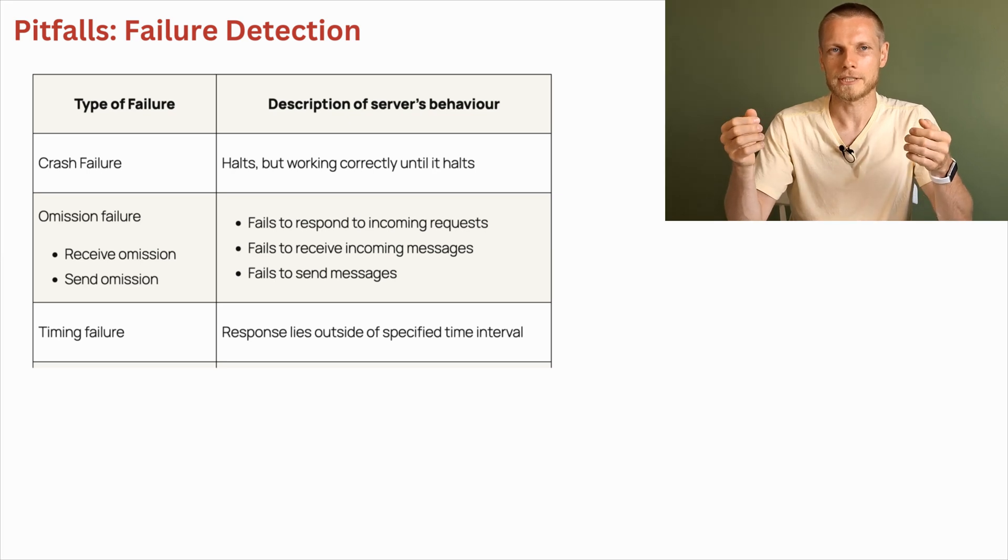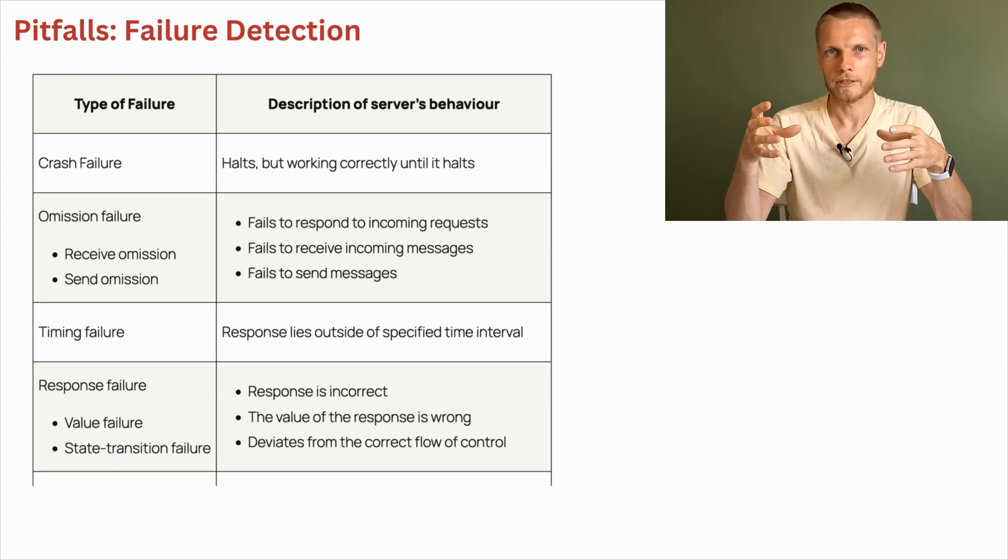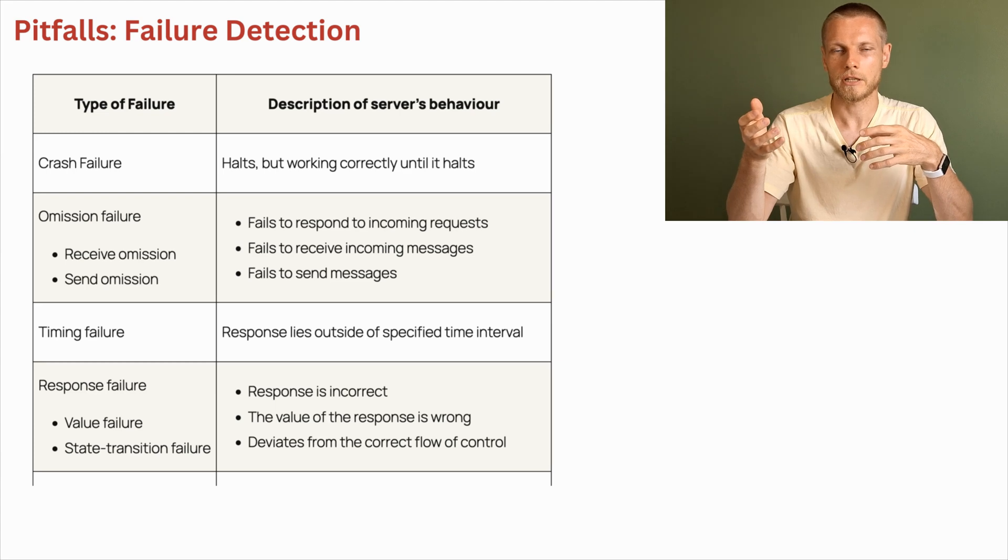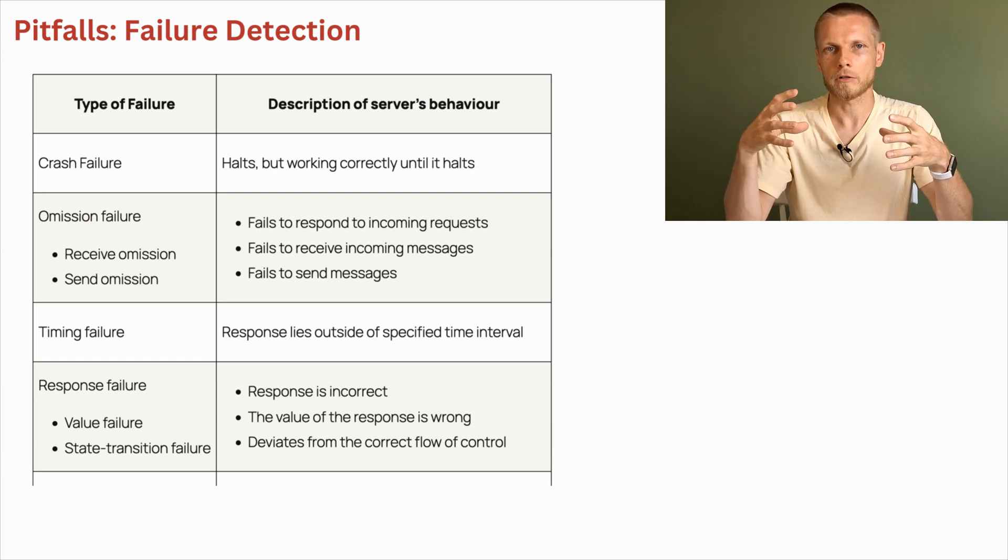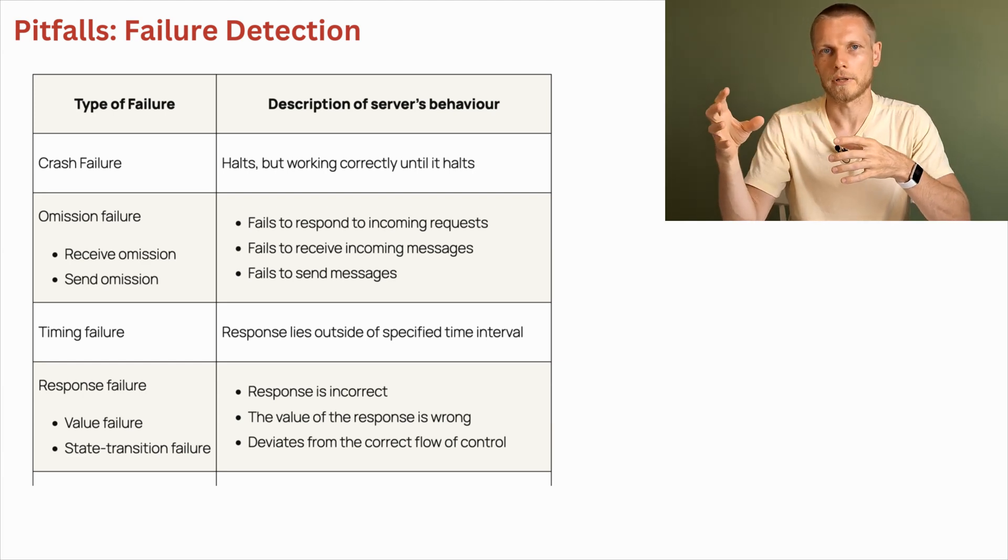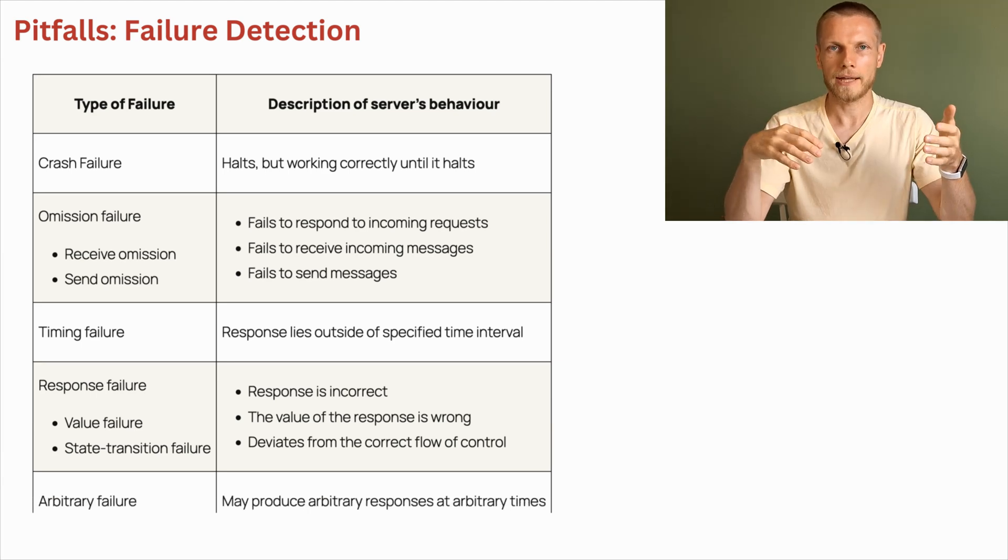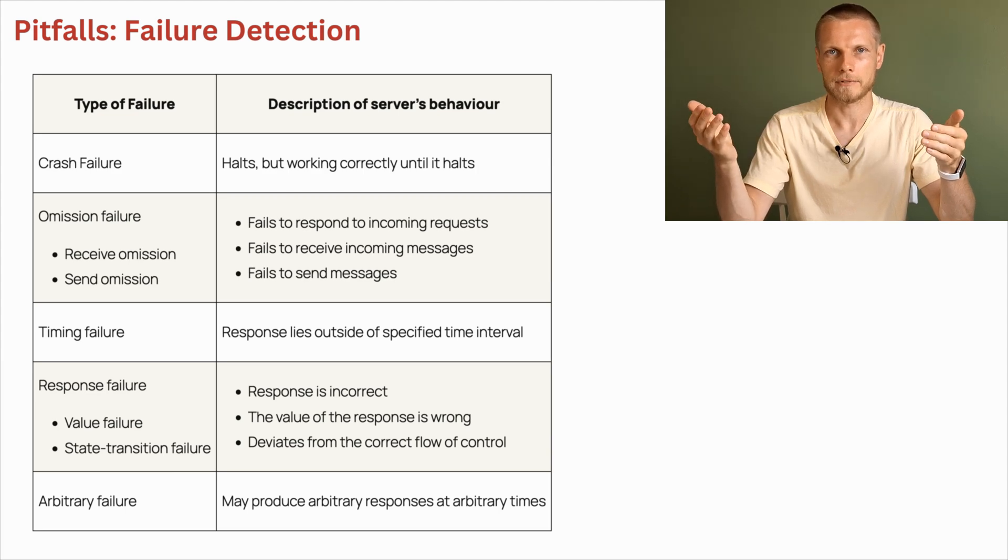And because of this, for other parties in the network, it seems like it's not working. Response failure is more tricky. In that case, server responds and it does it within the timeout, but responses are wrong. They can contain incorrect structure, they can have some misleading information, or they can be seemingly correct but they are out of a predefined flow. They have some logical error. And arbitrary failures can result in any kind of behavior at any time. So it's unpredictable, totally unpredictable.